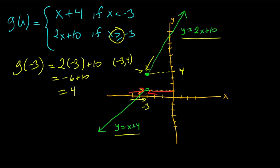Because y approaches different values from the left and right, we simply say there is no limit. It would have to be the same from both sides. Let's do one more example to show that piecewise functions can have limits.